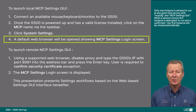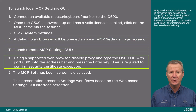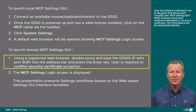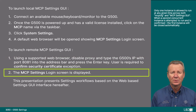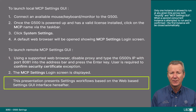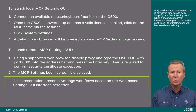To launch the remote MCP Settings GUI: 1. Use a supported web browser, disable proxy, and type the G500's IP with port 8081 into the address bar and press the Enter key. The user will be required to confirm the Security Certificate exception. 2. The MCP Settings login screen is now displayed. This presentation presents settings workflows based on the web-based settings GUI interface hereafter.